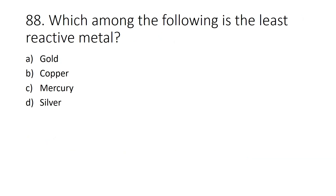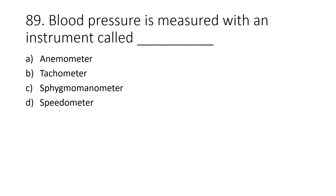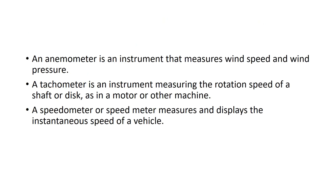Question number 88: Which among the following is the least reactive metal? Option A: Gold, Option B: Copper, Option C: Mercury, Option D: Silver. Answer: Option A, Gold. Question 89: Blood pressure is measured with an instrument called dash. Option A: Anemometer, Option B: Tachometer, Option C: Sphygmomanometer, Option D: Speedometer. Answer: Option C, Sphygmomanometer. An anemometer measures wind speed; a tachometer measures rotation speed of a shaft or disc in a motor; a speedometer measures instantaneous speed of a vehicle.